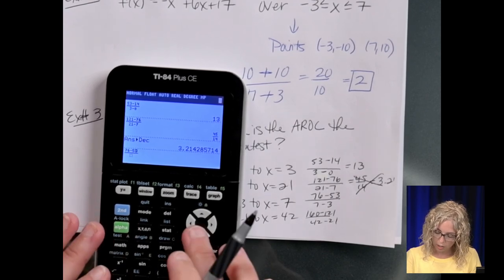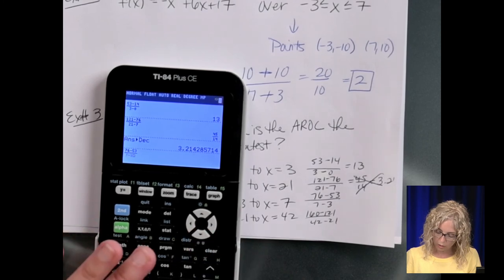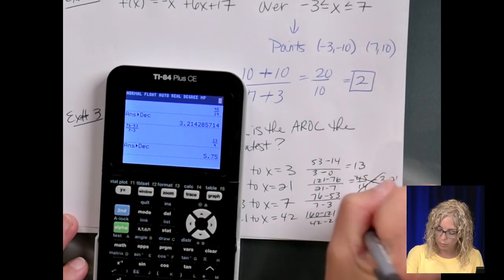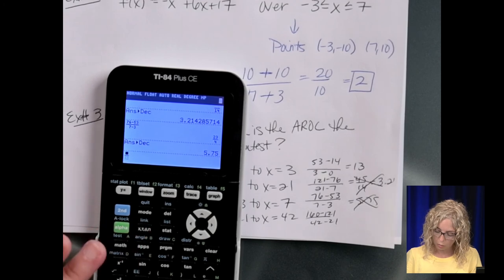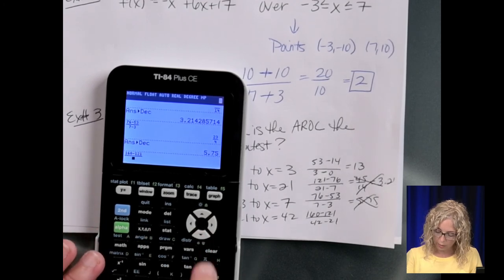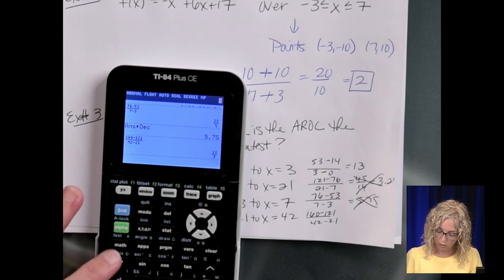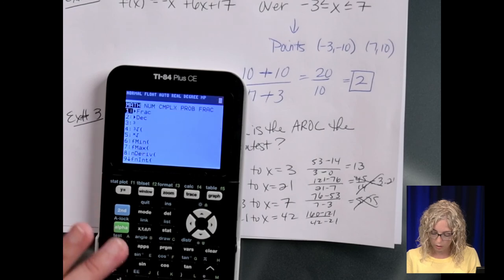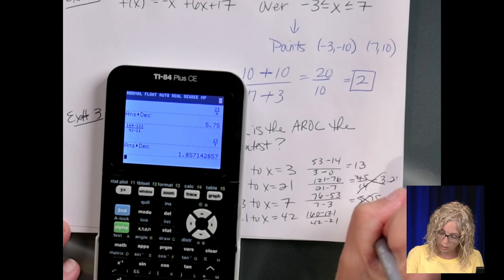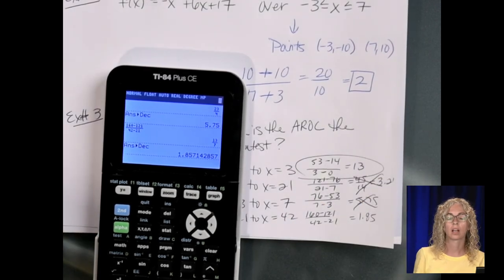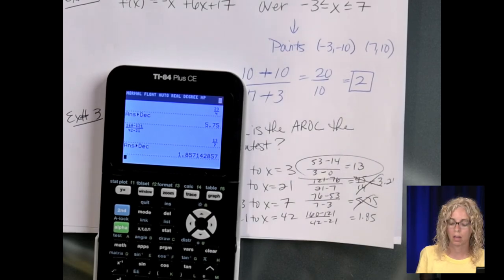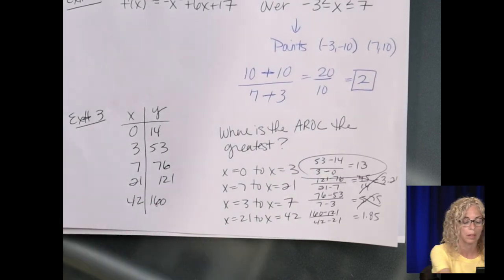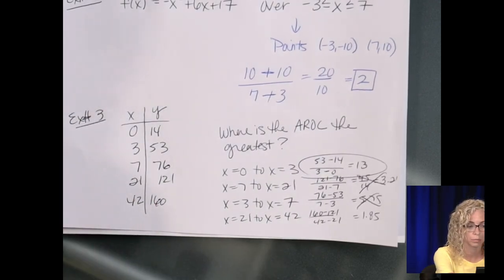76 minus 53, over 7 minus 3, change that to a decimal, that's out, it's 5.75, because that's the biggest. And then last, 160 minus 121, and then 42 minus 21, 13 over 7, it's going to be less than 2, so 1.85, so the first one is the largest. That involved a lot of math, a lot of work on the calculator, but you could just be looking at the table and typing them in, so it'd be a lot shorter.